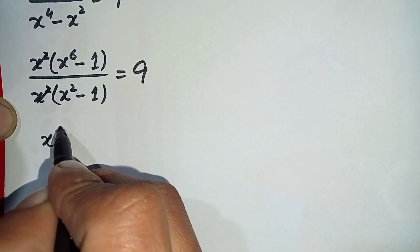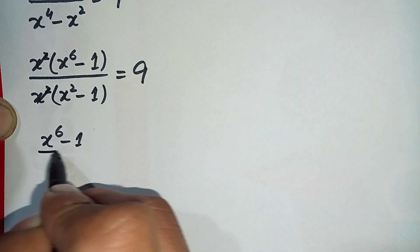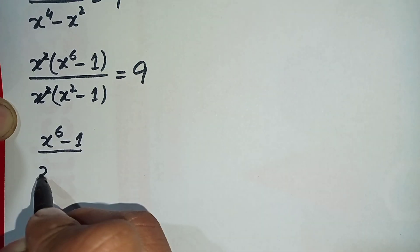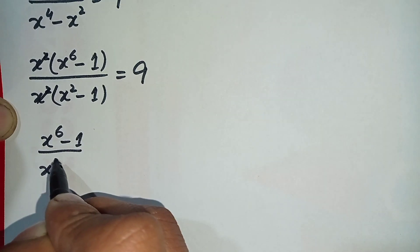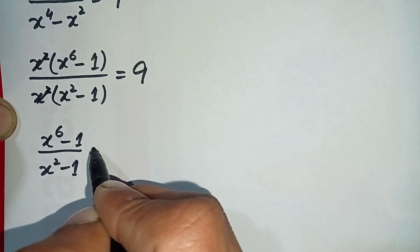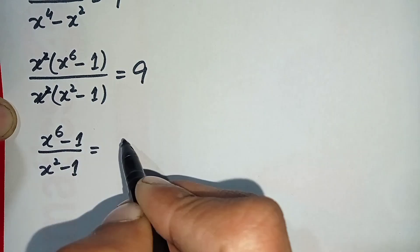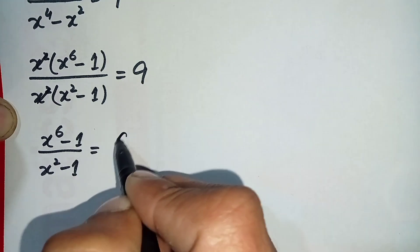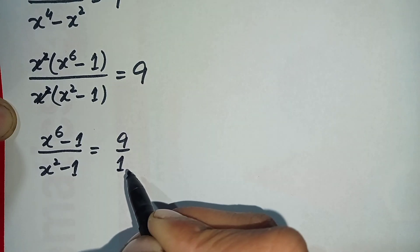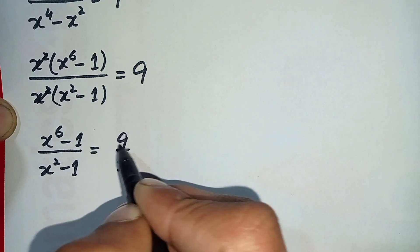After canceling, x raised to power 6 minus 1 is left in the numerator, and x squared minus 1 is left in the denominator, equal to 9.